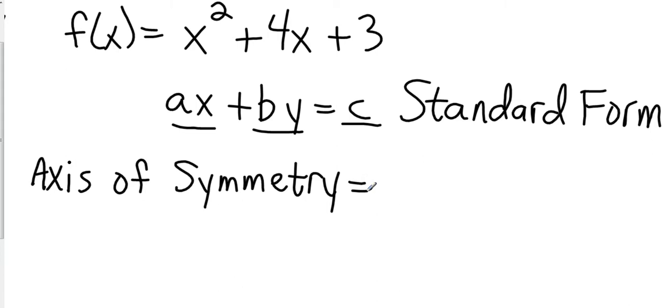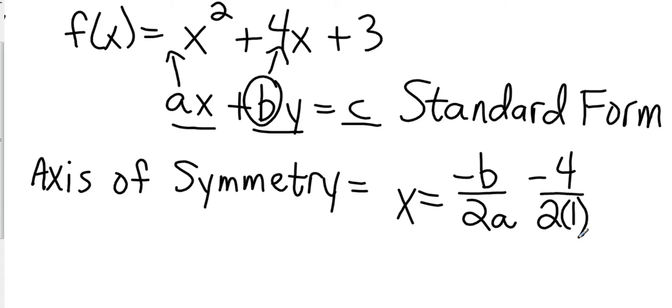To find that, that's going to be x equals negative b over 2a. So in this case, the b is my 4 because that's the number that's in front of the y and my a is the number that's in front of the x squared which in this case, because there's not one, it's just a 1. So that's going to be negative 4 over 2 times 1 which is negative 4 over 2 which reduces all the way to x equals negative 2.